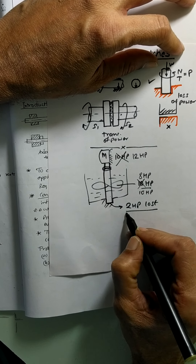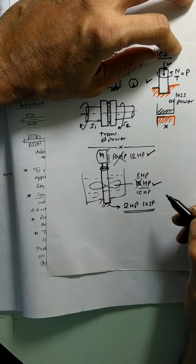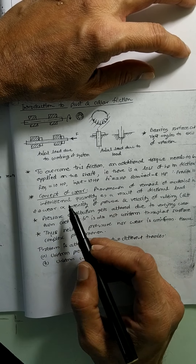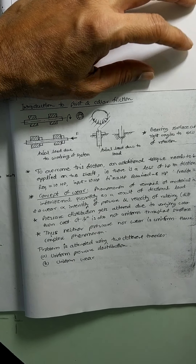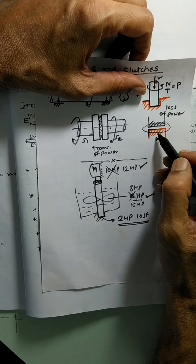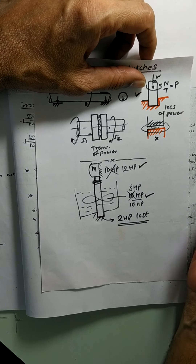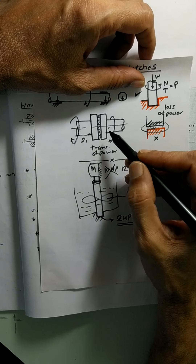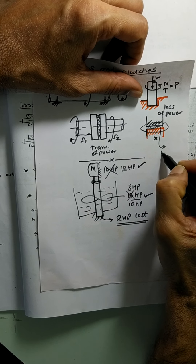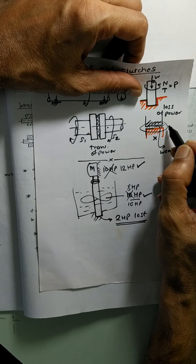We need to know how much power is going to be lost, and based on that we can modify the input power to get whatever amount of power is needed. Now the concept of wear: when the rotating shaft comes in contact with the stationary part — which we call the bearing — first thing is there is going to be friction. This friction results in either power loss or power transmission. Friction also causes wear, which is the removal of material.